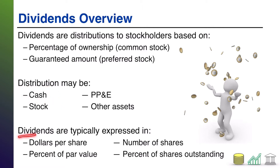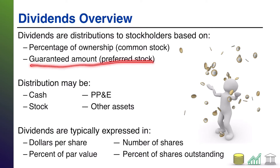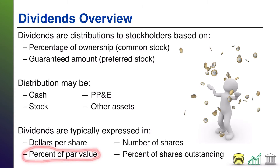Dividends are typically expressed in dollars per share, number of shares, percent of par value, or percent of shares outstanding. This all depends on what type of dividend is being given. For instance, if you're giving a cash dividend, you might express it as earning one dollar per share. If it's a guaranteed amount from preferred stock, it could be stated as a one percent return on the par value of that preferred stock.